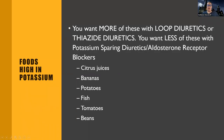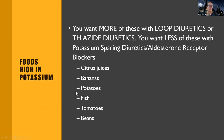Know what foods are high in potassium for teaching patients. For patients on potassium wasting diuretics like loop or thiazides, you want more of these foods. For potassium sparing or aldosterone blockers, you want to avoid them. High-potassium foods include citrus juices, bananas, potatoes, fish, tomatoes, and beans. This is definitely something to include in patient teaching.